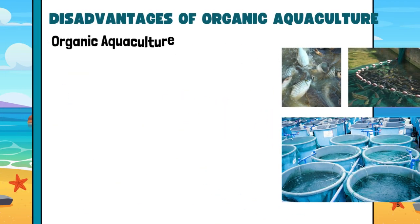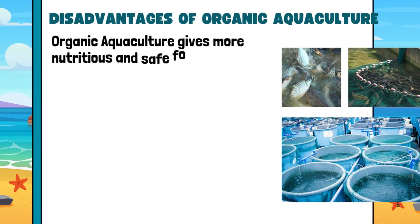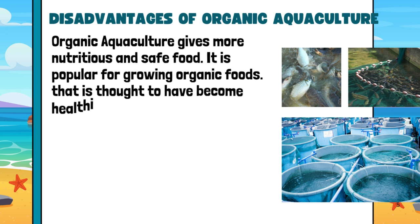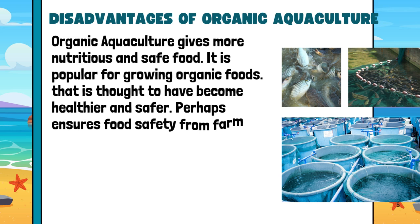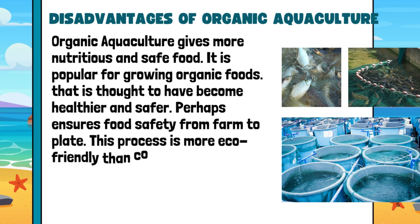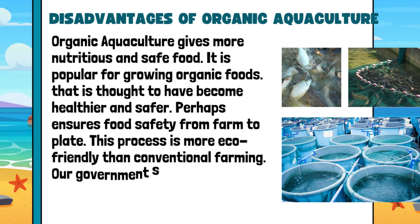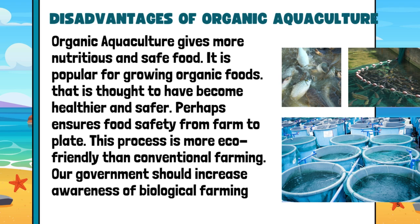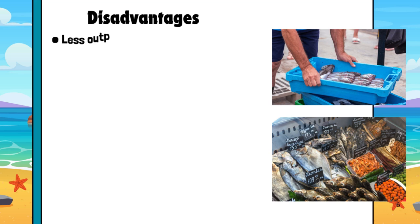Disadvantages of Organic Aquaculture. Organic aquaculture gives more nutritious and safe food. It is popular for growing organic foods that are thought to be healthier and safer. It ensures food safety from farm to plate. This process is more eco-friendly than conventional farming. Our government should increase awareness of biological farming.